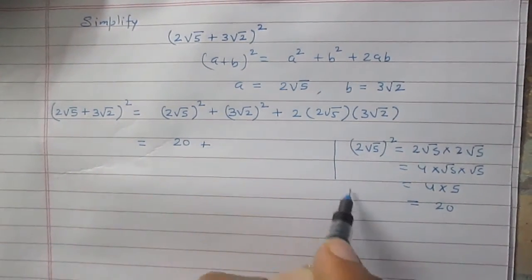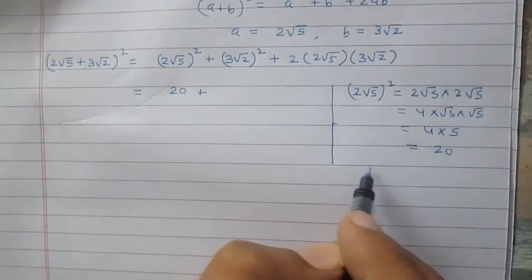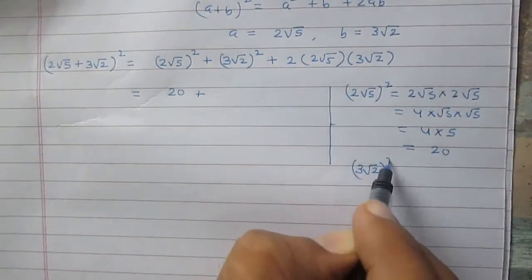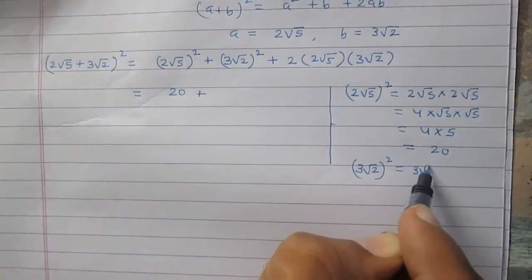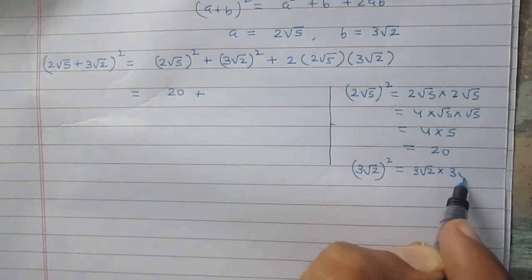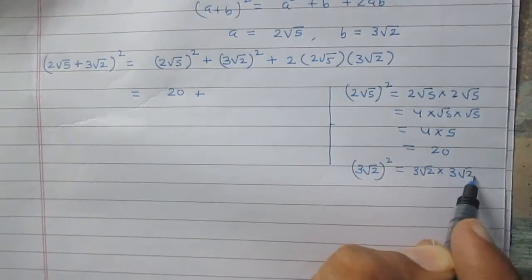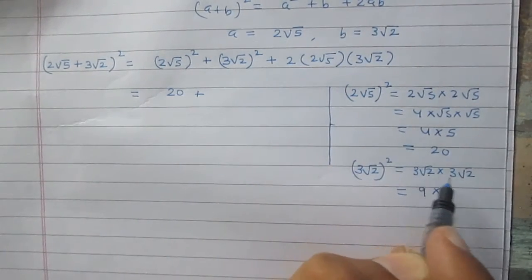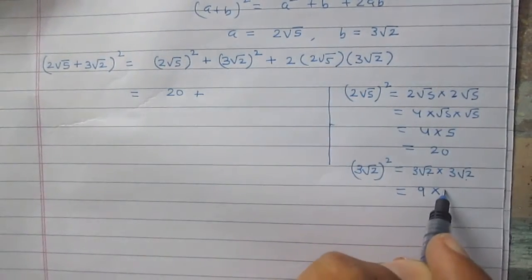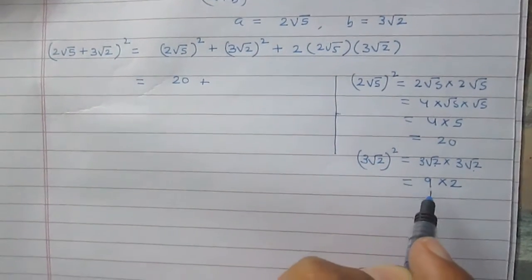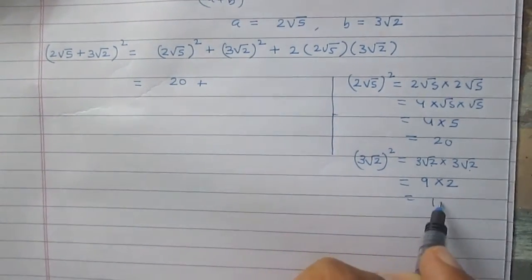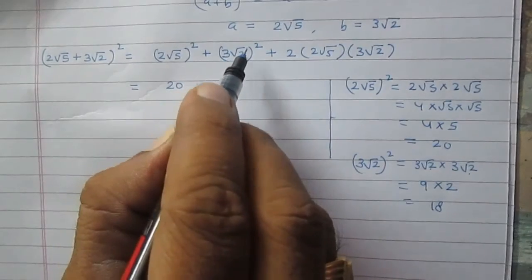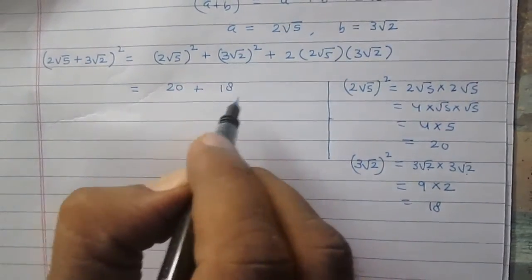Similarly, (3√2)² equals 3√2 multiplied by 3√2. 3 times 3 is 9, and √2 times √2 is 2, so 9 multiplied by 2 equals 18. So (3√2)² equals 18.